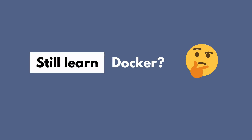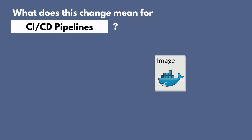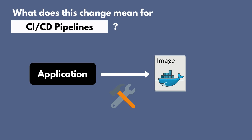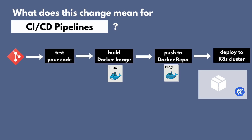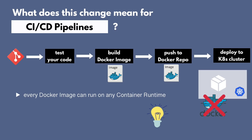A frequent question is: should I still learn Docker if I'm going to use Kubernetes, and what about building Docker images in a CI/CD pipeline? One of Docker's features is building images. Before an image can run as a container inside a Kubernetes cluster, you first have to build that image, and this is where you will still be using Docker in your CI/CD pipeline. If you have a complete CI/CD pipeline that builds Docker images and deploys to a Kubernetes cluster, those Docker images can be pushed to a Docker repository and will run perfectly in a Kubernetes cluster running containerd — every Docker image can run in every container runtime.